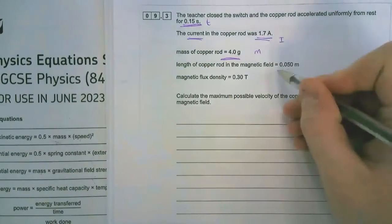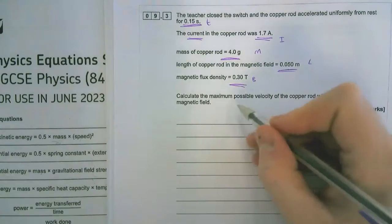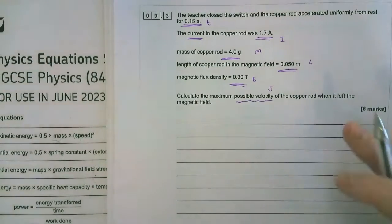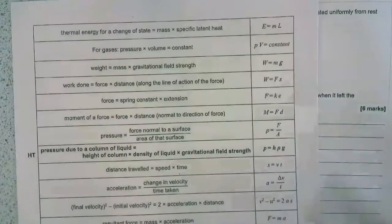So let's label what we've got. We've got time, we've got current, we've got mass, we've got length and flux density, and we're trying to find velocity. So we're going to need some equations. Let's look at our equation sheet. What could help us out here with those quantities?